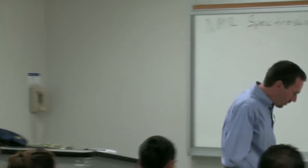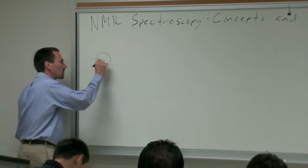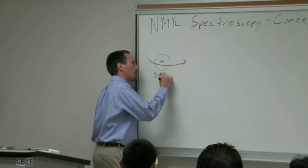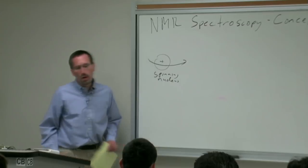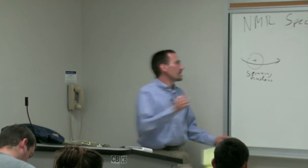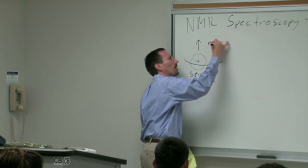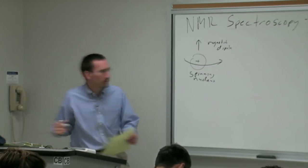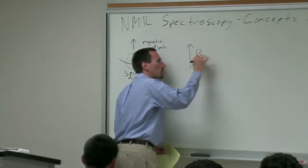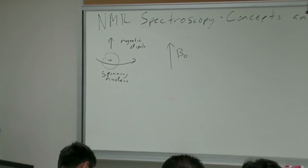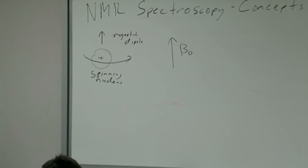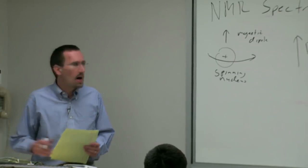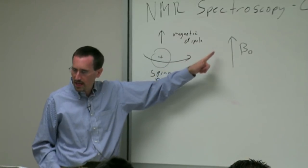Where NMR begins is with the concept that a nucleus of certain sorts — I'll just write a proton for now — has a spin to it. When you have a spinning charge it generates a magnetic dipole. If you apply a magnetic field, we'll call that B-naught, then you have two different spin states, or more. We'll start with the case of a proton or C13: you have two quantized spin states that can exist.